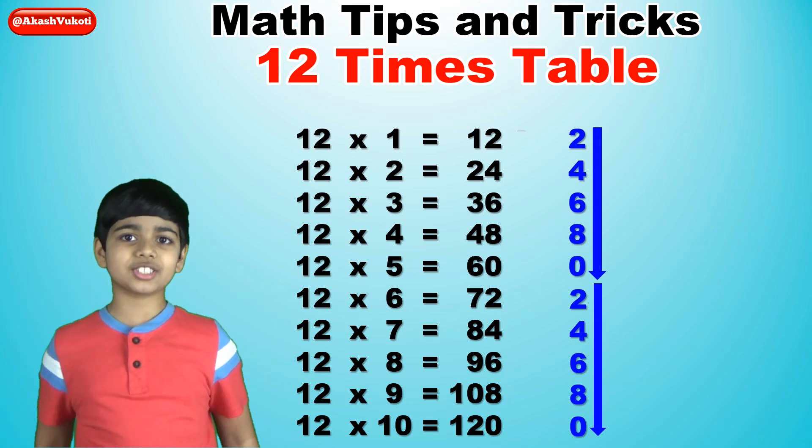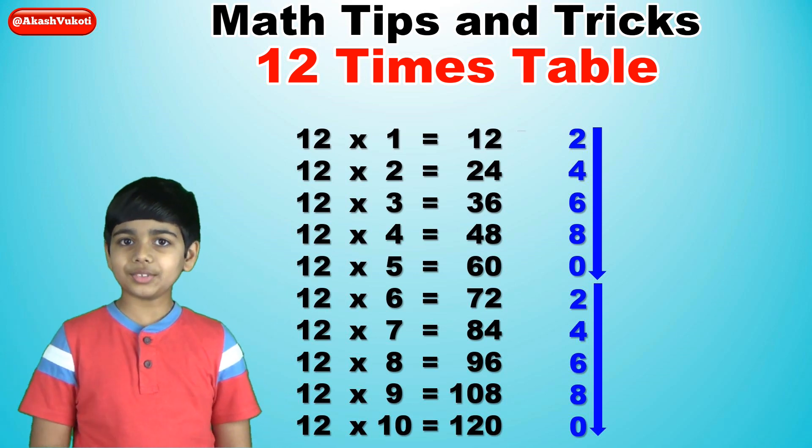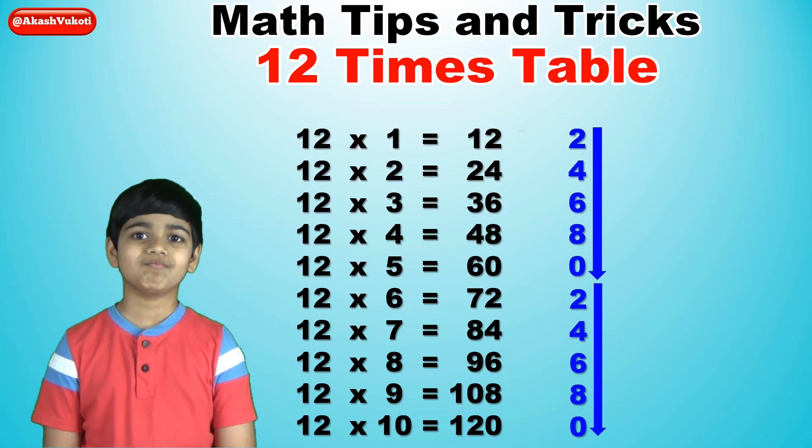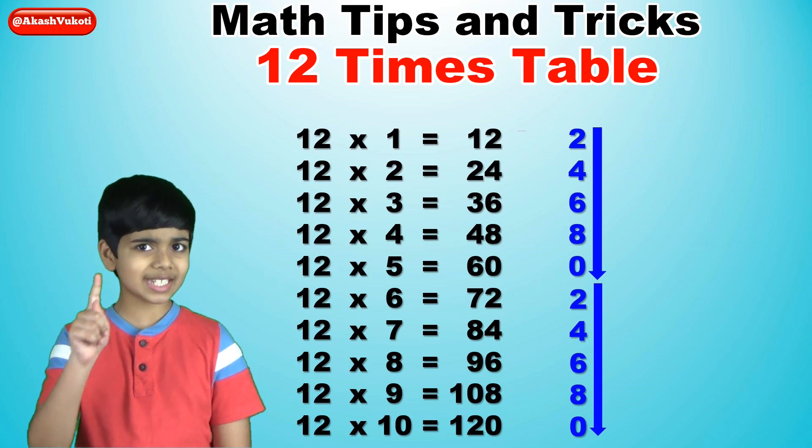Next, for the 10s digits, we just write every single number from 1 to 12. That sounds simple, but there's a catch.